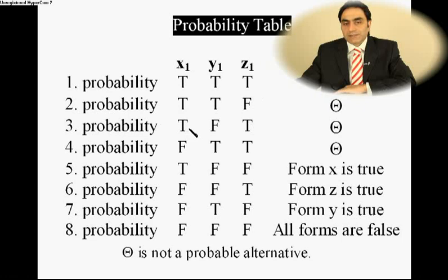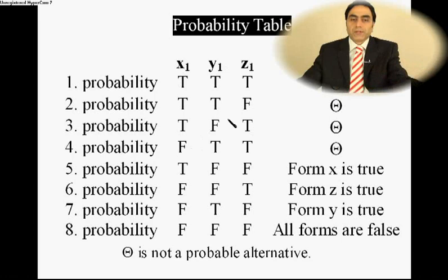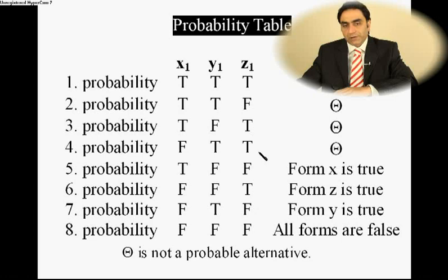At the third probability, X1T Z1T — it's impossible, the result is theta. At the fourth probability, X1F Y1T and Z1T — it's also impossible because of Y1 and Z1 together, and the result is theta.